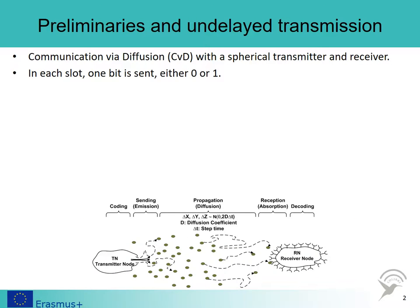We have a classical CVD setting where both the transmitter and receiver nodes are assumed to be spherical bodies. We call each one of these bodies a nanonetworking-enabled node, in short, NEN. In our setting, time is divided into equal sized slots. In each slot, one symbol is sent and each symbol carries one bit of information, either 0 or 1.